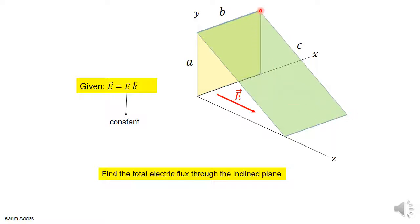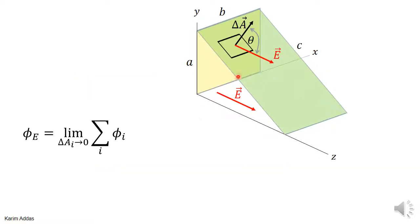To get the electric flux through the inclined surface, we cut the surface into small area elements, look at the electric field vector and the area vector (which is perpendicular to the surface), note the angle between them, and sum the flux contributions over all area elements.